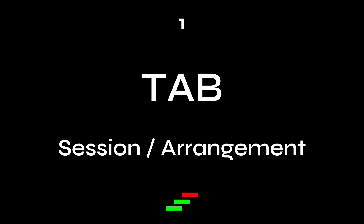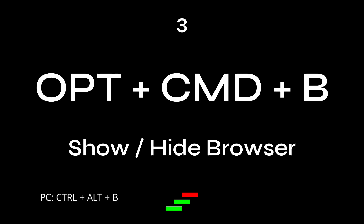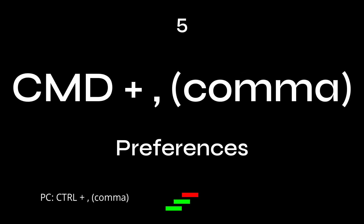One: Tab — toggles between the session view and the arrangement view. Two: Shift-Tab — toggles between the device view and the clip view. Three: Option-Command-B shows and hides the browser. Four: Option-Command-L shows and hides the detail. Five: Command-Comma brings up your preferences window.